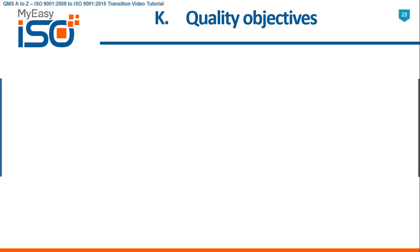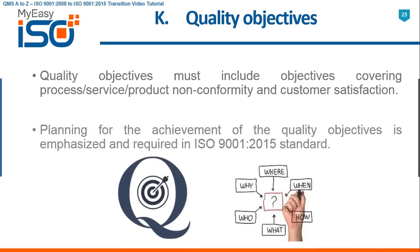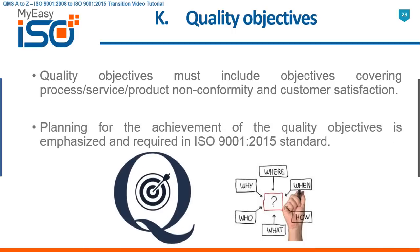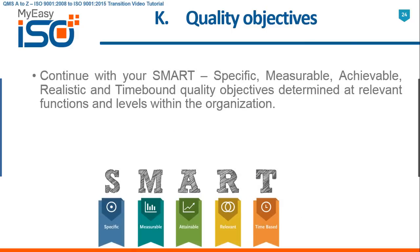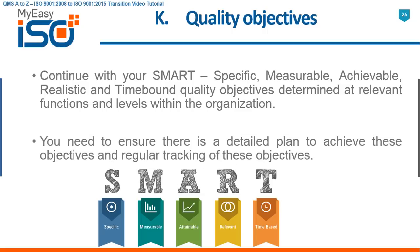K. Quality Objectives. Quality Objectives must include objectives covering process, service, product nonconformity, and customer satisfaction. Planning for the achievement of Quality Objectives is emphasized and required in ISO 9001 2015. Continue with your SMART — specific, measurable, achievable, realistic, and time-bound — Quality Objectives determined at relevant functions and levels within the organization. You need to ensure there is a detailed plan to achieve these objectives and regular tracking of them.